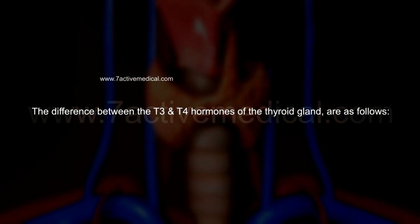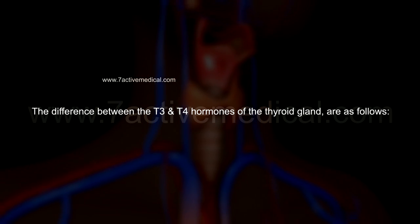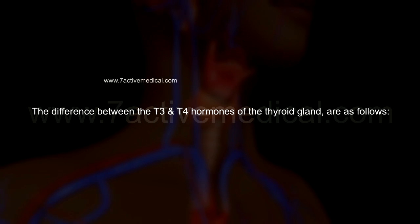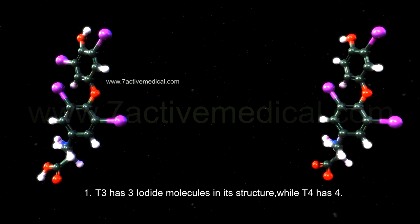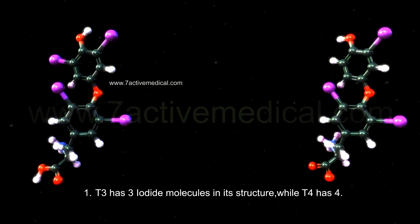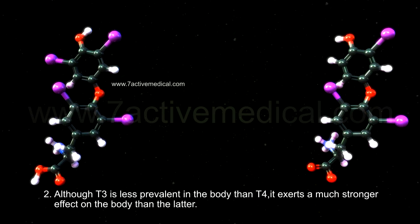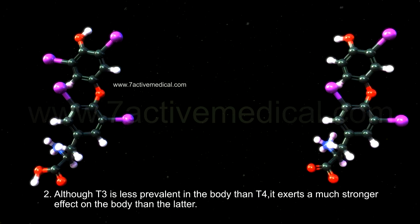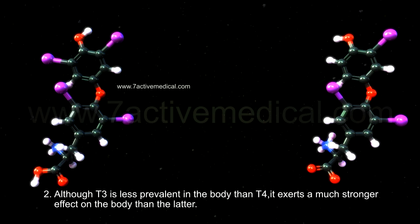The differences between the T3 and T4 hormones of the thyroid gland are as follows. First, T3 has 3 iodide molecules in its structure, while T4 has 4. Second, although T3 is less prevalent in the body than T4, it exerts a much stronger effect on the body than the latter.